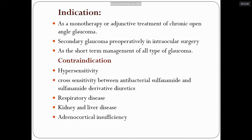Carbonic anhydrase inhibitors are used as monotherapy or adjunctive therapy for chronic open-angle glaucoma, secondary glaucoma, and preoperatively or intraoperatively as short-term management for all types of glaucoma. They are not used for long-term management. Contraindications include hypersensitivity, cross-sensitivity with antibacterial sulfonamide drugs or sulfonamide-derivative diuretics, chronic respiratory disease, liver and kidney disease, and adrenocortical insufficiency.